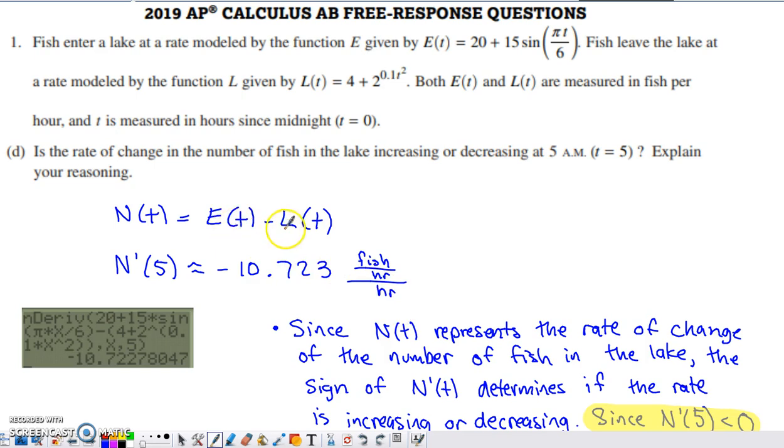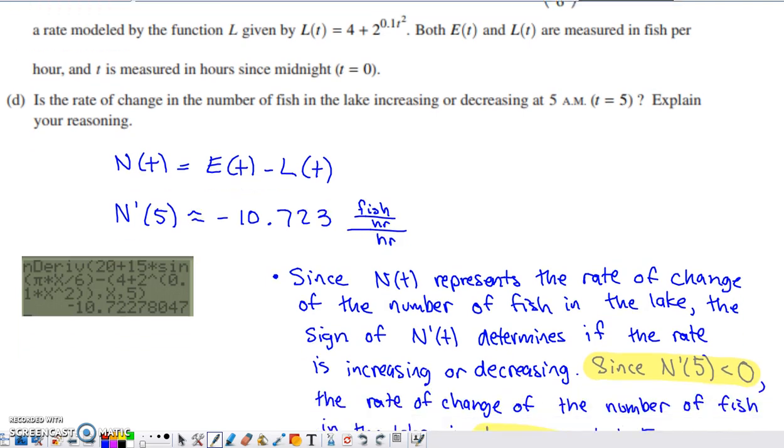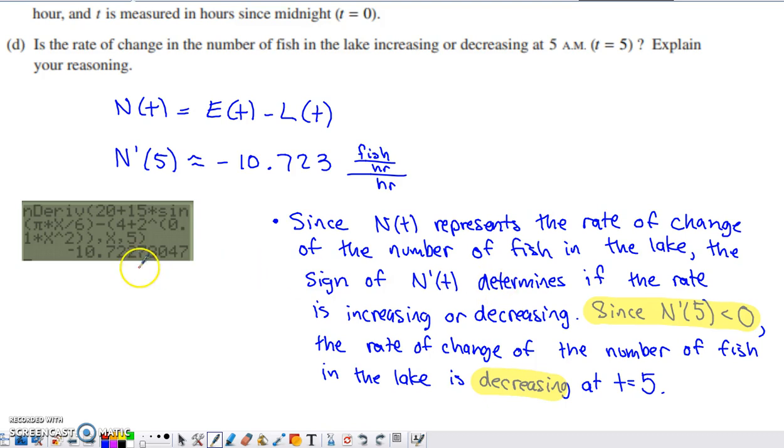So this was already measured in fish per hour. When I take the derivative, I'm going to have that set of units divided by the units of the independent variable once again, which in this case is hours. So since that net rate of change function represents the rate of change of the number of fish in the lake and its derivative is negative at time five, I know that the rate of change is decreasing at time five.